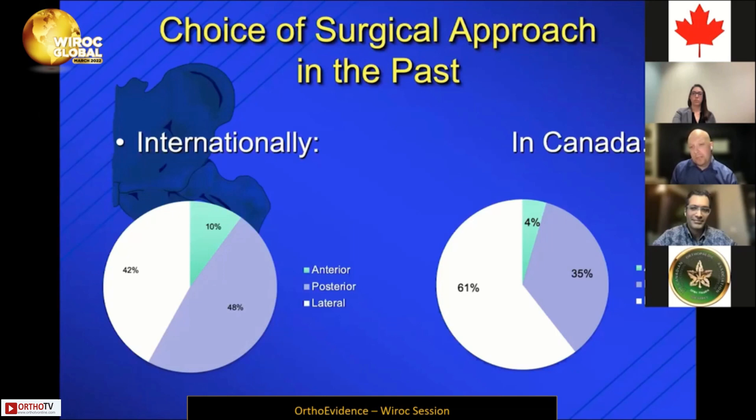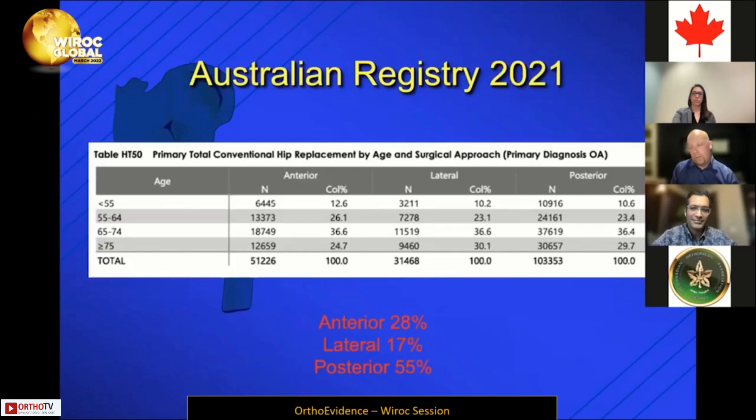At that time in Canada, lateral was actually the dominant approach, as many of the training programs have focused on that over the years. Now if you look over time across multiple countries — this is just an example from the most recent data from the Australian Joint Replacement Registry — anterior and other novel approaches are taking up more and more of the segment. In that data, the anterior approach occupies 28 percent of the data from 2021.